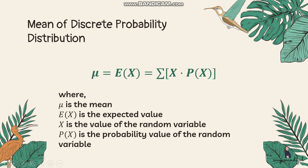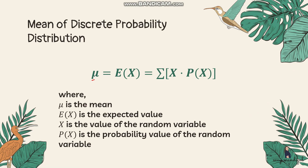To solve for the mean of a discrete probability distribution, we use the formula: mu — the symbol for mean — equals E(x), the expected value of x. The mean and expected value are the same thing. To compute it, get the summation of x times p(x), where x is the value of the random variable and p(x) is its corresponding probability. Multiply each value by its probability and sum them all.